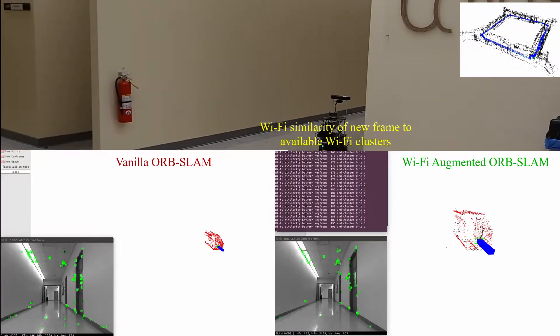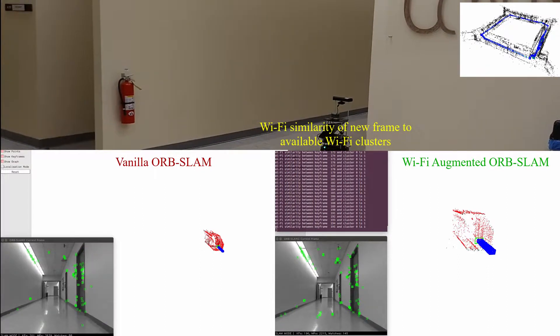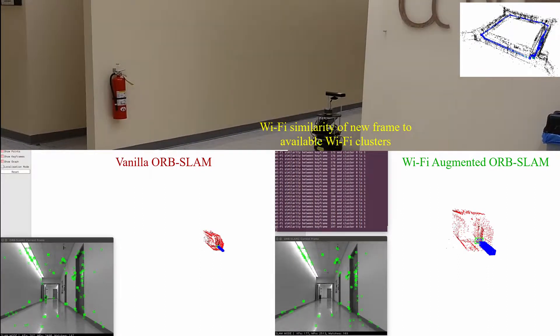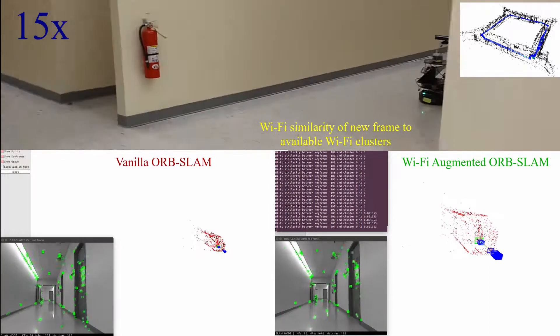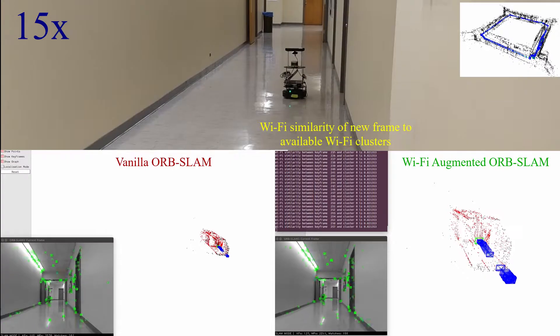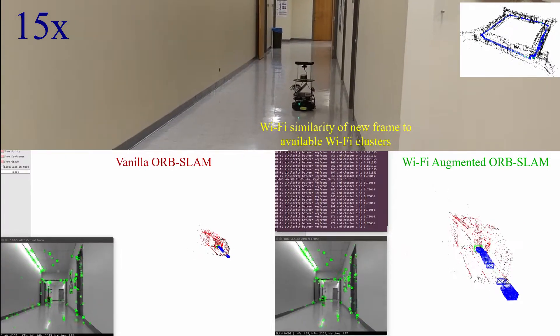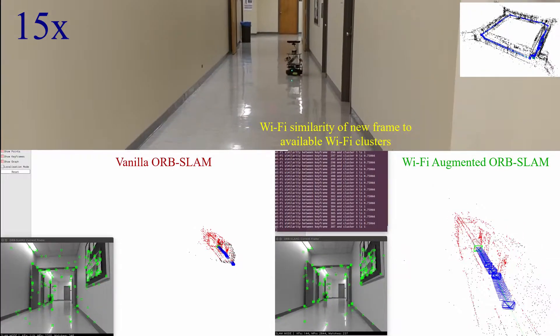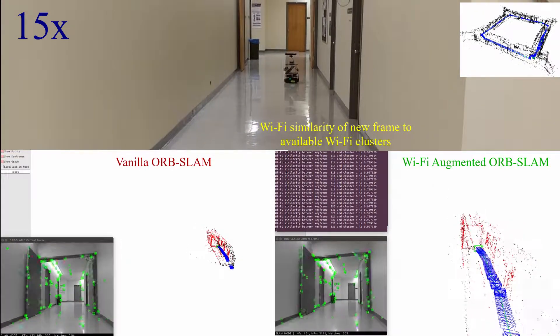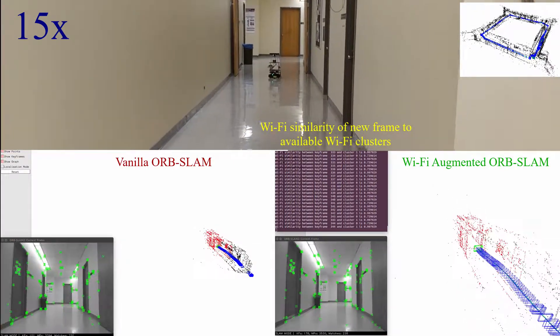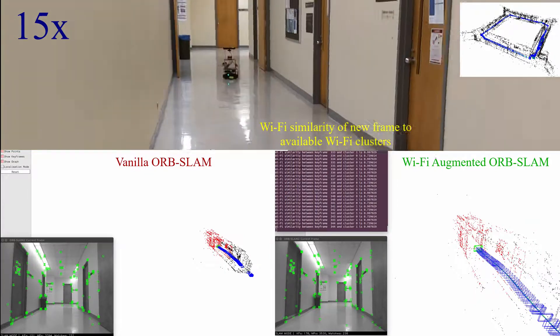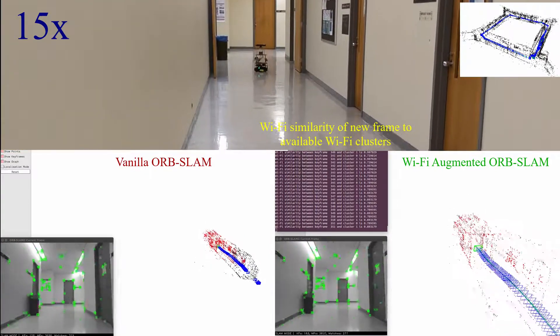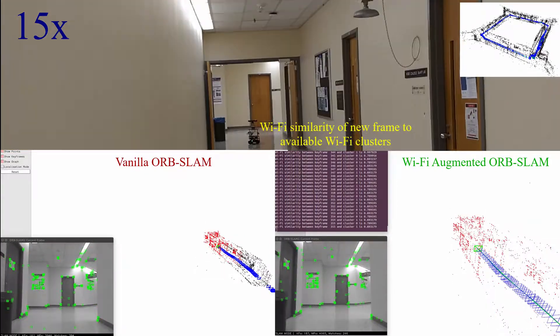A small window on the top left corner of the Wi-Fi augmented version shows the cosine similarity between the current keyframe and available Wi-Fi clusters. As observed, the similarity decreases as distance increases.